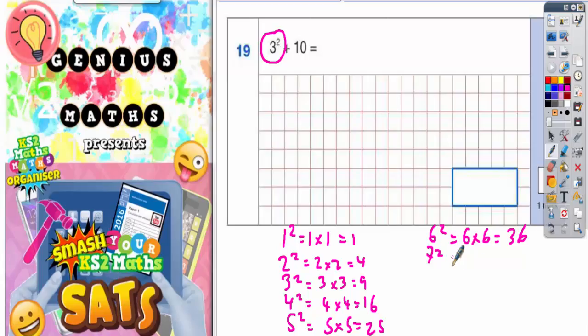7 squared is 7 times 7, which is 49. 8 squared is 8 times 8, which is 64. 9 squared is 9 times 9, which is 81. And 10 squared is 10 times 10, which is 100.